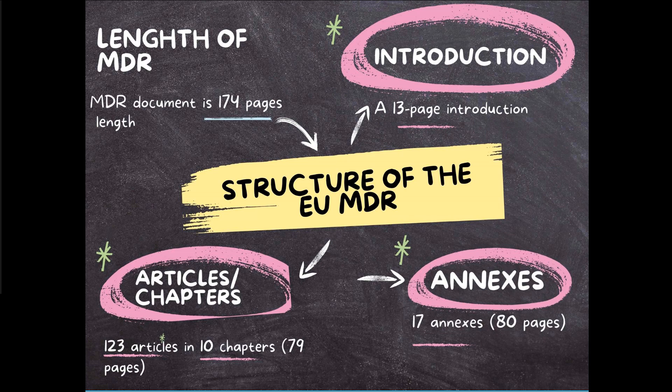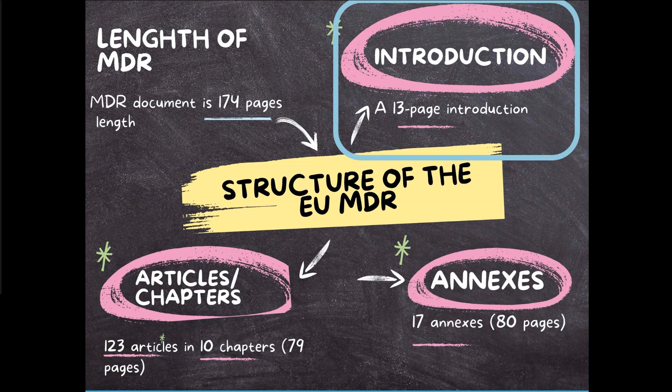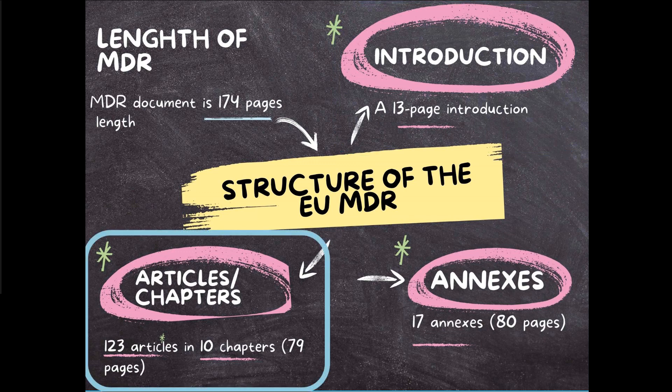What is the structure of the MDR? Well, it's a large document — 174 pages in length. At the beginning there's an introduction section of 13 pages, and next we have our articles and chapters, which are the meat of the document. Chapters are groupings or sections that organize the different articles, and articles are the primary building blocks of the EU MDR. Each article addresses a particular subject. There are 10 chapters in total and 123 articles.